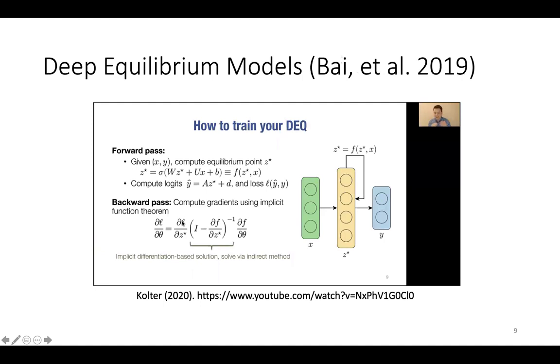Deep equilibrium models are neural networks that solve for a fixed point as intermediate step, Z-star, of their computation graph. One property of these models is that rather than backpropagating through the entire fixed point iteration, it is possible to just compute gradients with the implicit function theorem without needing to backprop through the iteration.